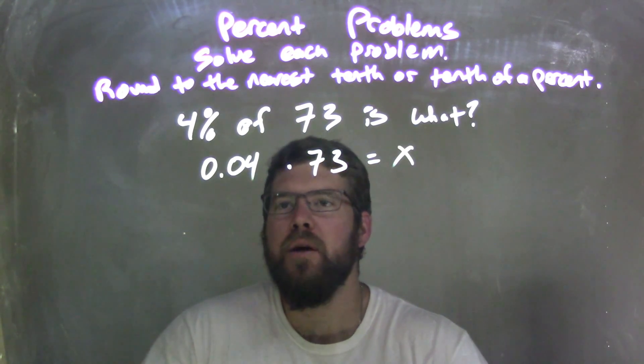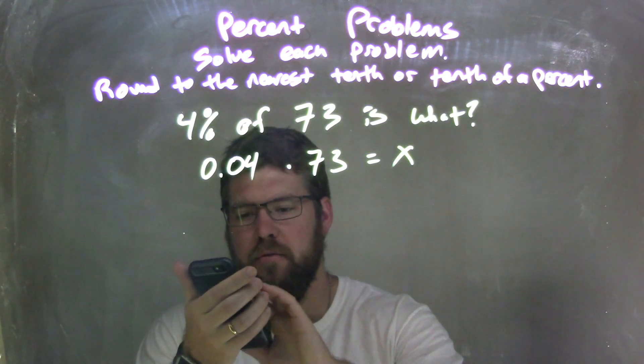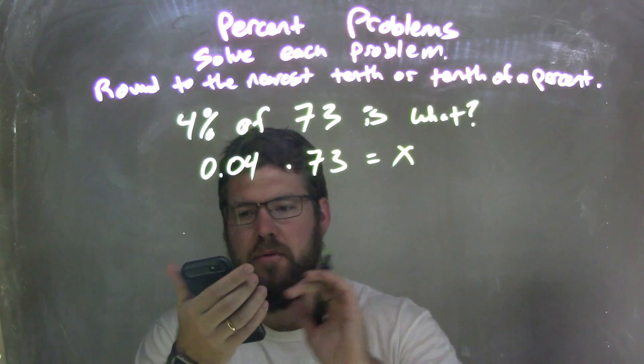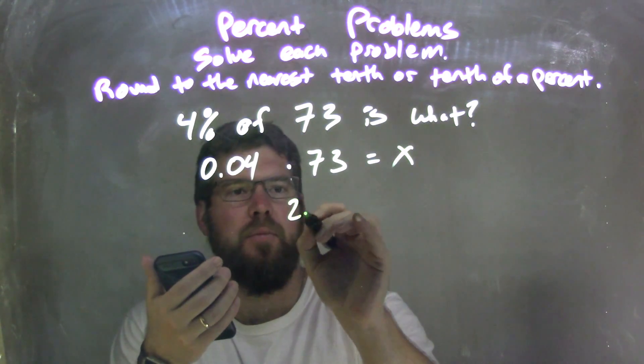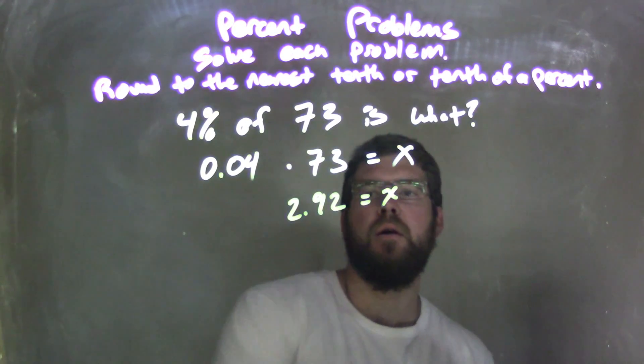So to solve that, what's 0.04 times 73? Well, here's my calculator here. 0.04 times 73 comes out to be 2.92. So 2.92 is equal to x.